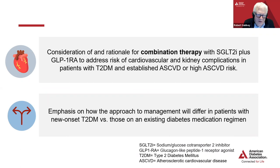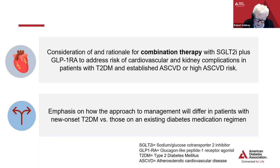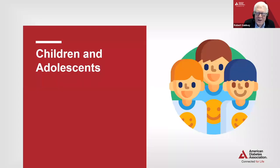Other new information is the consideration of and rationale for combination therapy with both SGLT2 medications and GLP-1 receptor agonists to address cardiovascular disease and kidney complications. There's also an emphasis on how to approach management for different patient subgroups — for example, new-onset type 2 diabetes versus people with existing diabetes regimens. There is also information pertaining to bempedoic acid in combination therapy for LDL lowering.